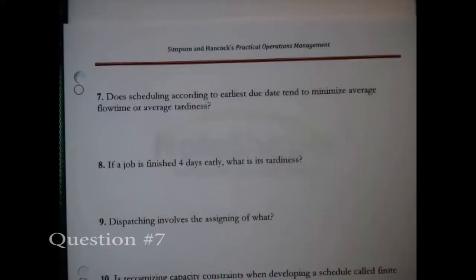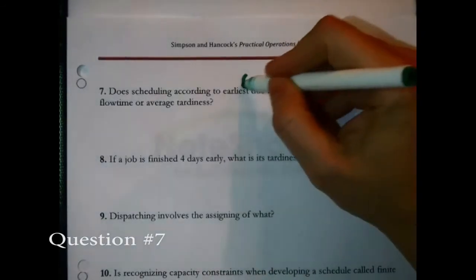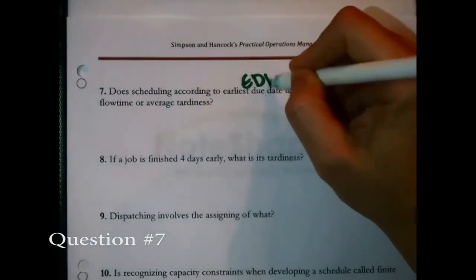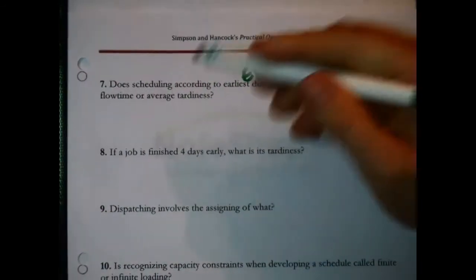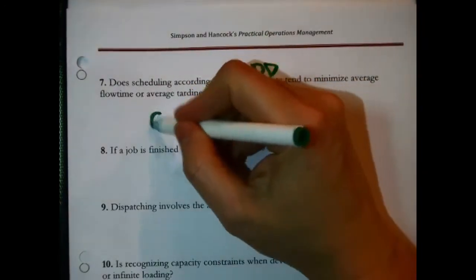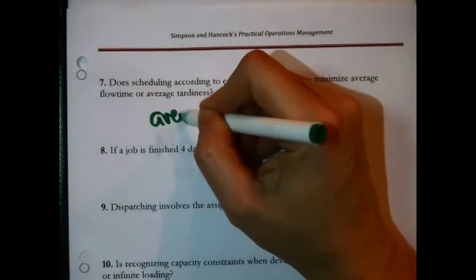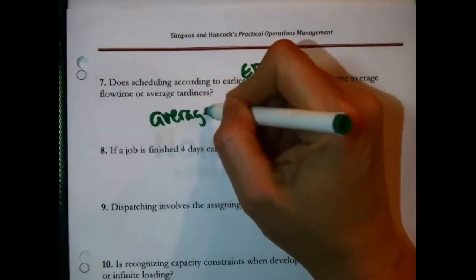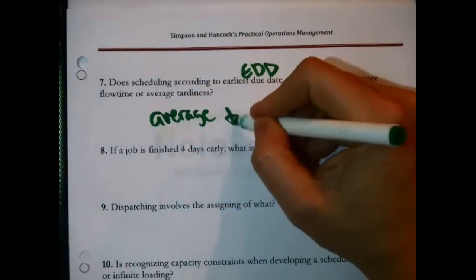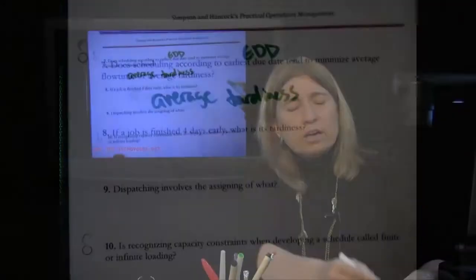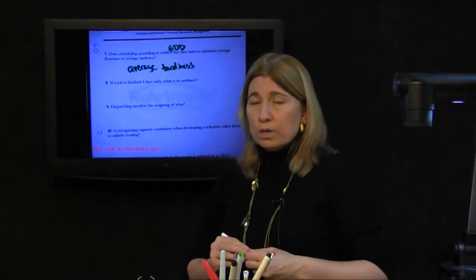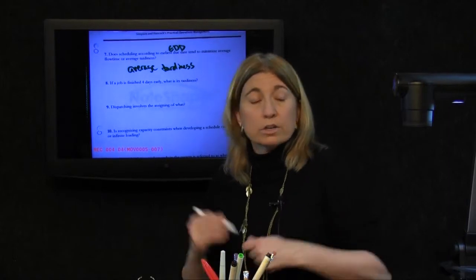Question 7: Does scheduling according to earliest due date tend to minimize average flow time or average tardiness? This is the average tardiness one. Because if you are sorting them according to when they are due, that would make sense — that would tend to minimize the overall average tardiness.